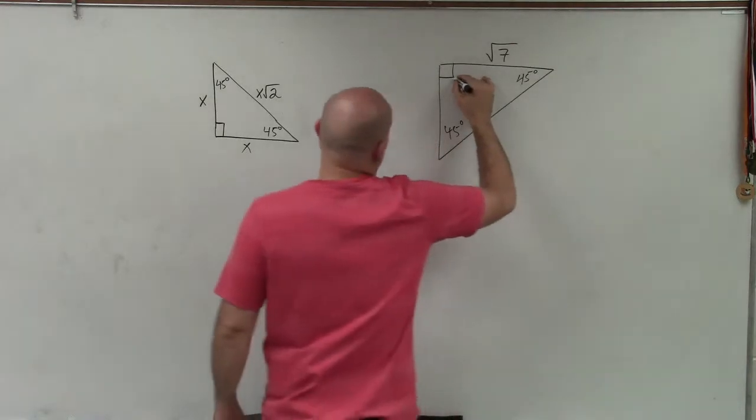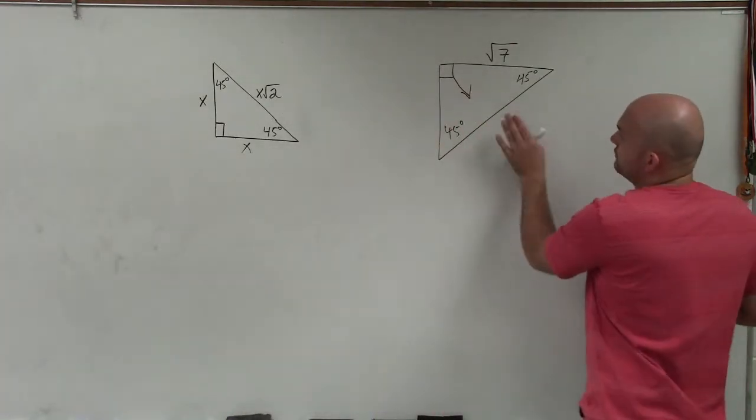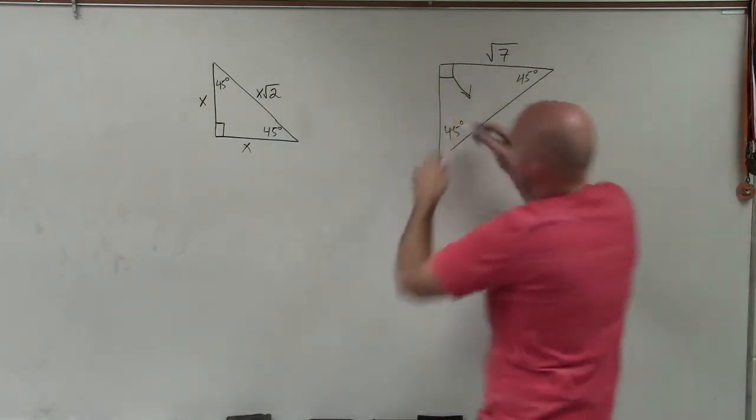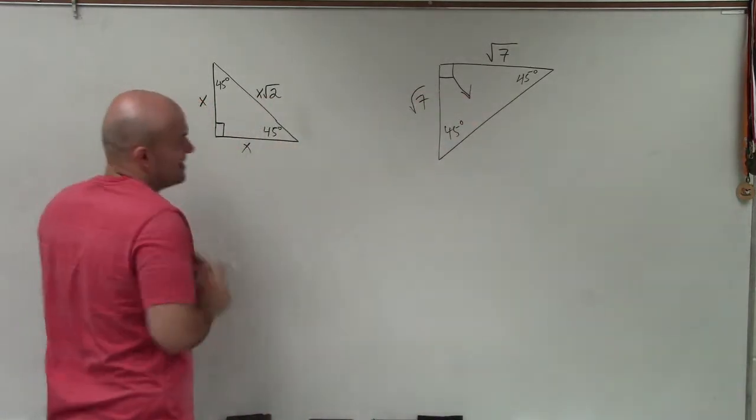Now, remember that the hypotenuse is always directly across from a 90-degree angle. So therefore, this is my hypotenuse. This has to be my leg. Since this is the square root of 7, this has to be the square root of 7, because since one leg is x, the other leg is x.